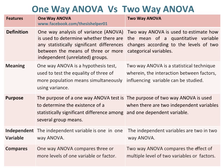The purpose of a one-way ANOVA test is to determine the existence of a statistically significant difference among several group means. Whereas the purpose of two-way ANOVA is applied when there are two independent variables and one dependent variable.